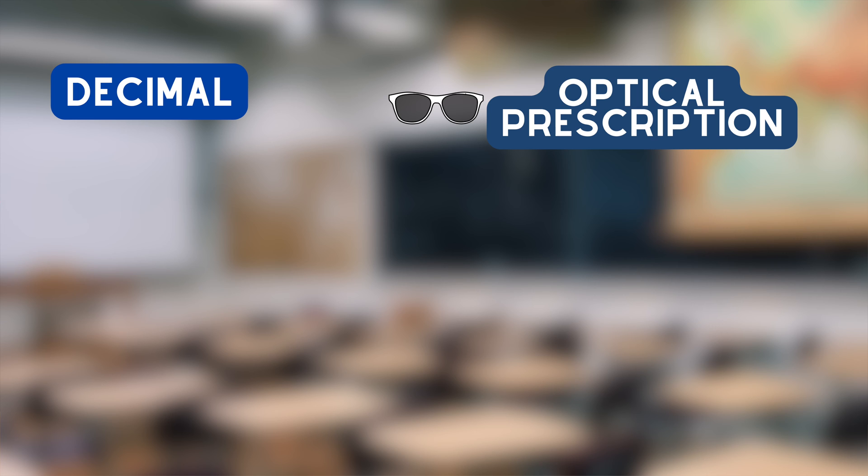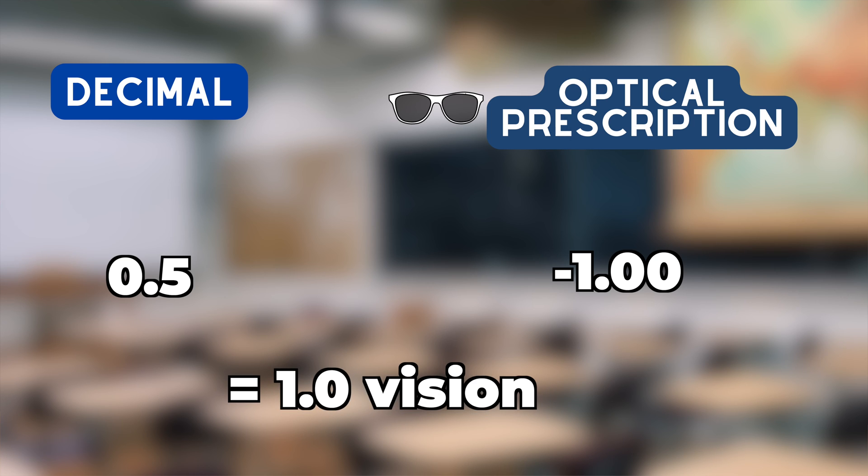However, this becomes very confusing when we are talking about your optical prescription at the same time. For example, a person with 0.5 vision would have to have about negative 1.0 diopters of nearsightedness correction for achieving 1.0 vision. You can see why things can get confusing.